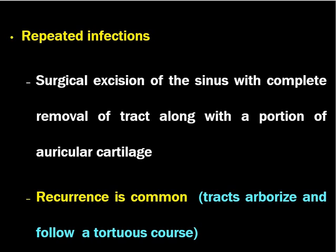When the sinus is repeatedly infected, we have to excise the sinus with complete removal of the tract along with a portion of the auricular cartilage. This is important — the excision of auricular cartilage — because the sinus is many times attached to the ascending crus of the helix. If the sinus wall is not removed, there may be a chance of recurrence. A small amount of the ascending crus of the helix is to be removed along with the sinus. The indication for surgery is repeated infections. The tracts arise and follow a tortuous course, sometimes in a deeper plane, so there is a chance of recurrence. Before surgery, you should explain to the patient that there is a chance of recurrence.